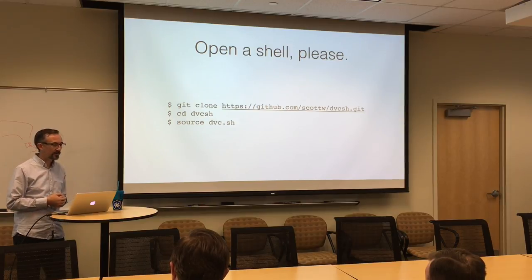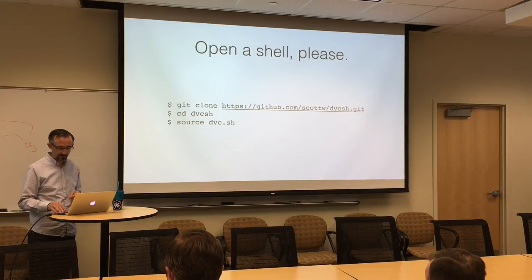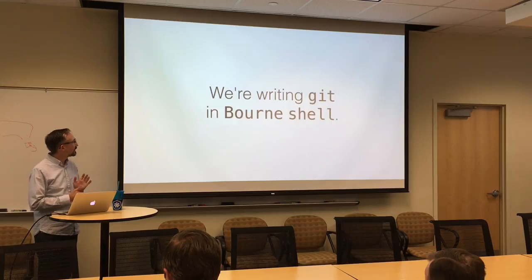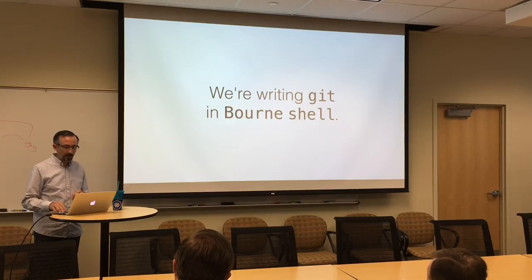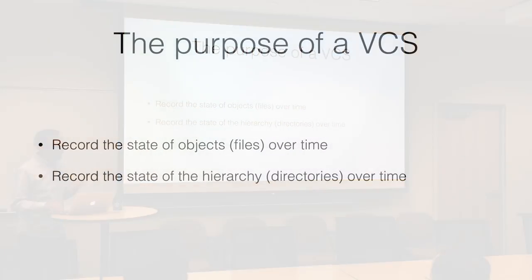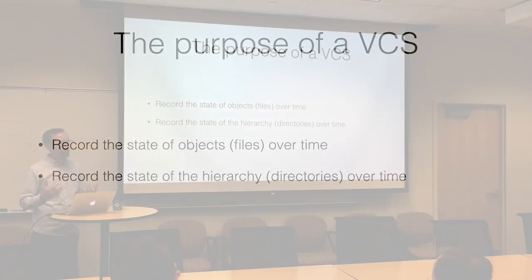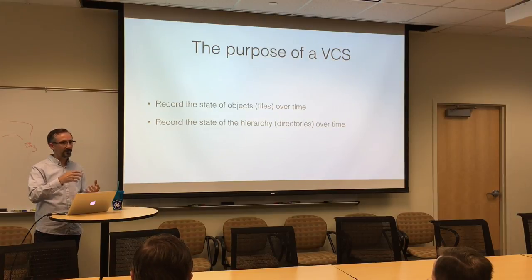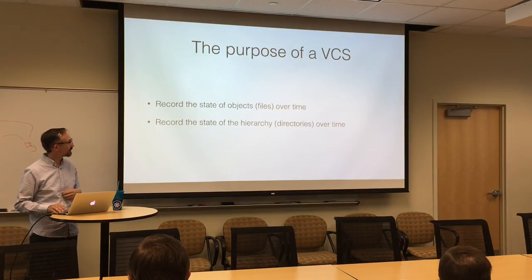These functions will disappear when your shell session terminates, so take a moment to look at it if you're uncertain of my motives. What we're going to be doing today is writing Git using the Bourne shell — this will only take about 15-20 minutes. Let's talk about what the purposes of a version control system are: one is to record the state of objects or files over time; the second is to record the state of the hierarchies or directories over time. Directories are really just metadata for the files — it's how they're related, imposing an order on them.